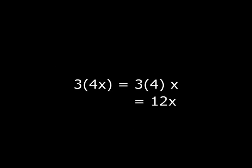3 times 4x: you multiply 3 times the 4 to get 12, and then it's still multiplied by x, so you stick it out there on the side.